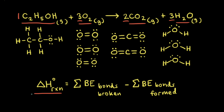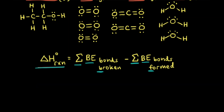To find the standard change in enthalpy for this chemical reaction, we need to sum the bond enthalpies of the bonds that are broken, and from that we subtract the sum of the bond enthalpies of the bonds that are formed. To figure out which bonds are broken and which bonds are formed, it's helpful to look at the dot structures for our molecules.